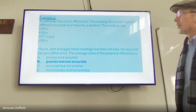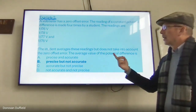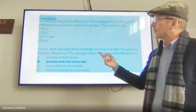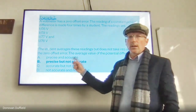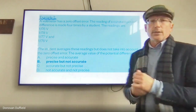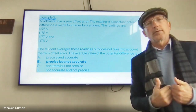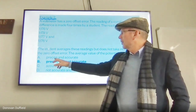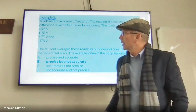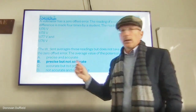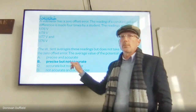Example 2: a voltmeter has a zero offset error. A student reads a constant potential difference four times: 1.176, 1.178, 1.177, 1.176 volts. The student averages these but doesn't account for, say, a 0.5 volt offset error — so the result is not accurate. However, it is definitely precise because the readings only vary by about 0.001 to 0.002 volts. It's precise but not accurate.